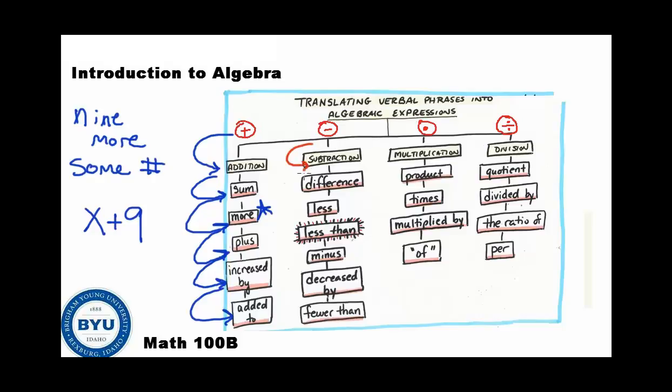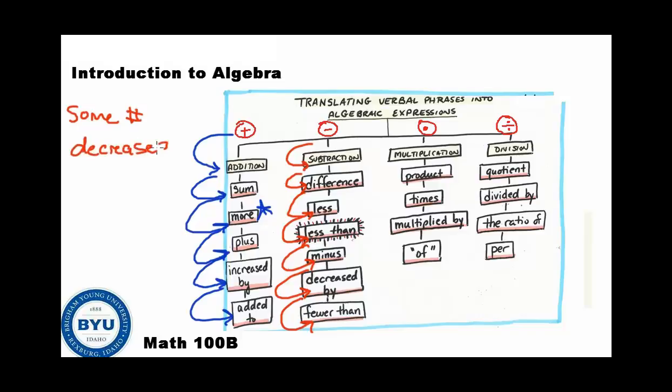We have subtraction, which can also translate into difference. Less, less than, and that one's highlighted because we're going to talk about it. Minus, decreased by, or fewer than. So, all of these words translate into subtraction. And we should be ready to see those and use a subtraction whenever we're told to. For example, if we said, some number decreased by 13. Now, if I said translate this into math, you would take some number, and you can pick any variable here. We're going to go ahead and use the variable n on this one, just for fun. Some number decreased by 13, decreased by means subtraction. So, we would say n minus 13.